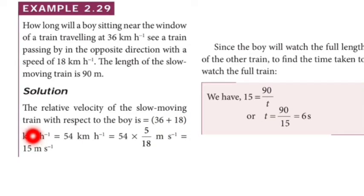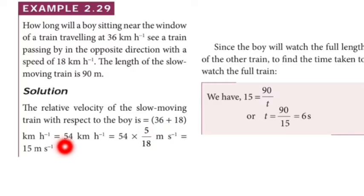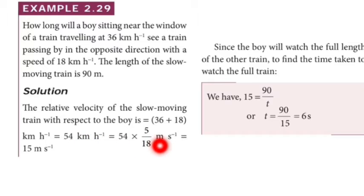The relative velocity of the slow-moving train with respect to the boy: since both trains travel in opposite directions, we use case number 2 formula: V_A plus V_B. That is 36 plus 18 equals 54 km per hour. The SI unit of velocity is meter per second. To convert: multiply by 5/18, or equivalently 54 × 1000 divided by 3600.